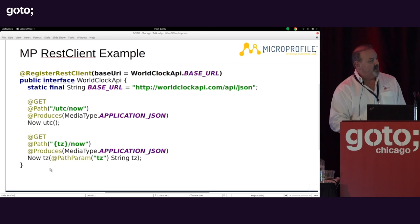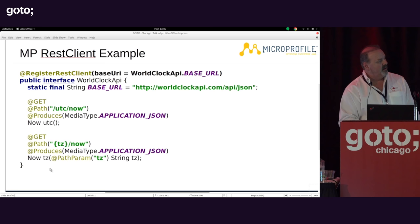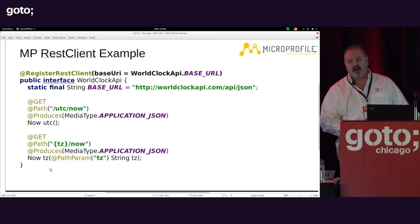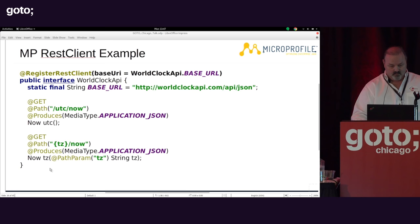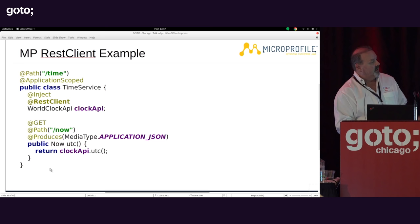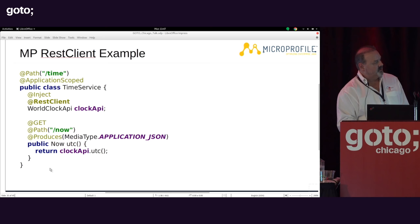To use the REST client API, you first define your type-safe interface with the register REST client annotation — this can also be overridden by a MicroProfile configuration value. You define an interface with the representation of the JAX-RS endpoints you want from your type-safe proxy, specifying the path, type, and return object. Then in a JAX-RS service, you inject that endpoint using the REST client annotation to inject this WorldClock API interface from the previous slide. In the method, you use the type-safe proxy to make the query and return the object.